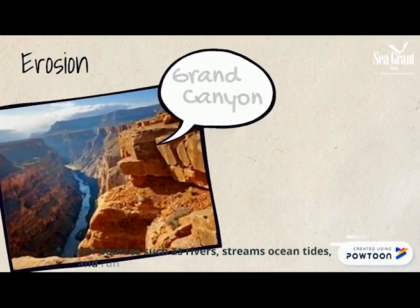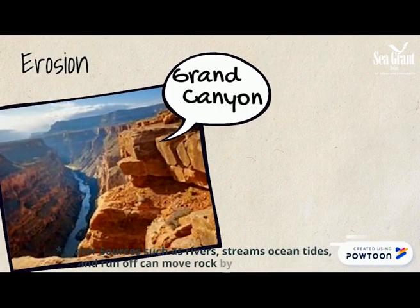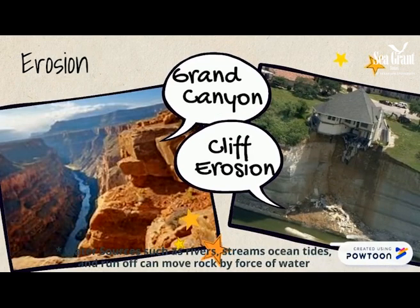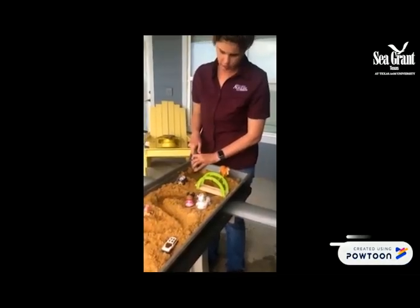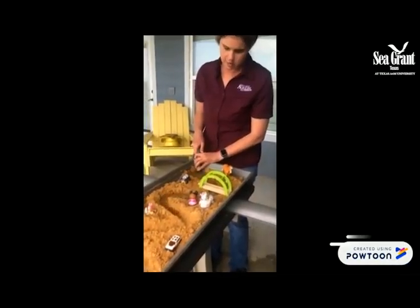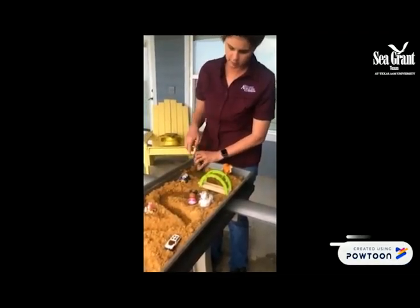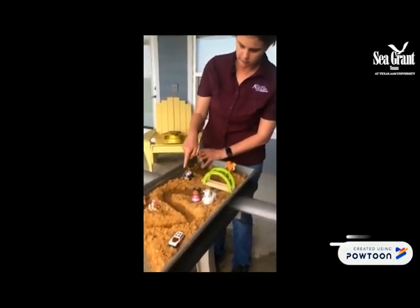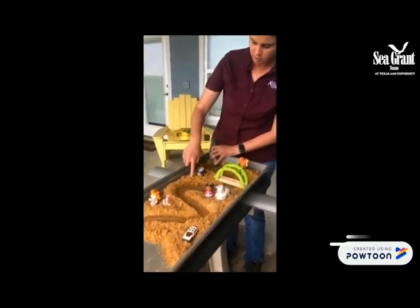Erosion is the force of water eroding away the sediment. The Grand Canyon was formed by erosion, layer by layer over millions of years, leaving behind fossils in the layers. As you can see, the water is meandering down the river.